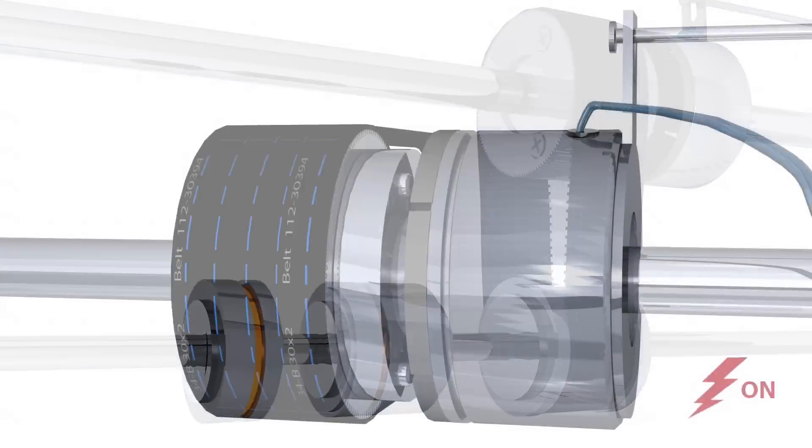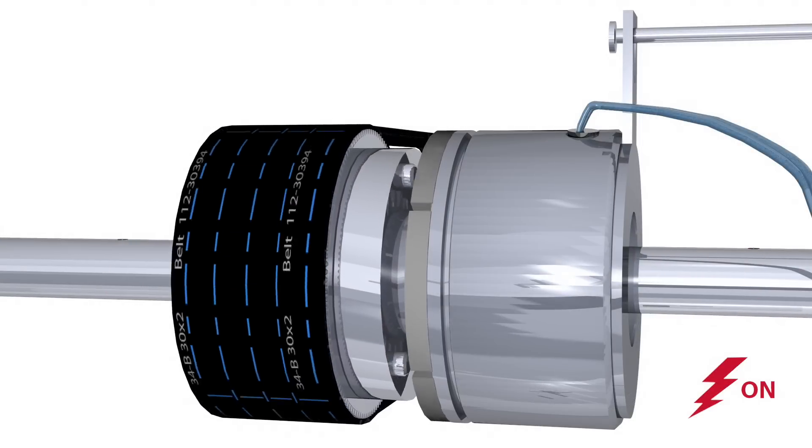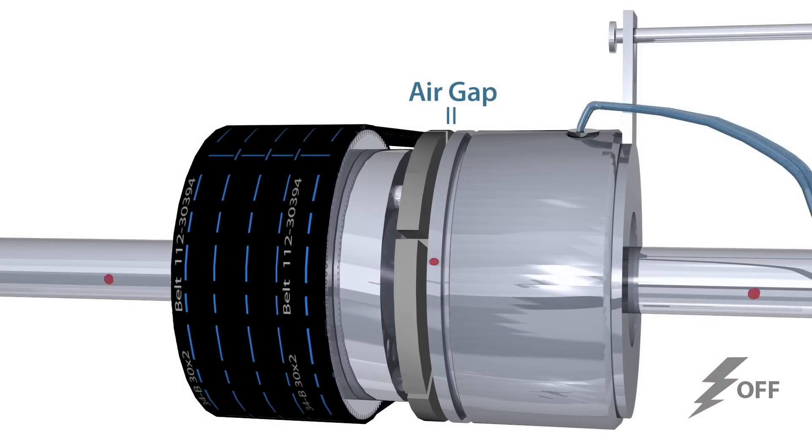When current or voltage is removed from the clutch, springs hold the armature away from the rotor surface, creating a small air gap.